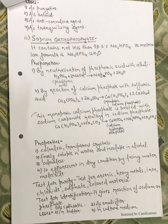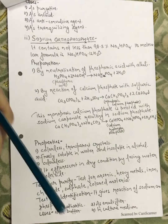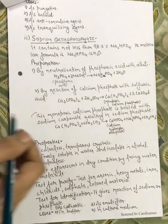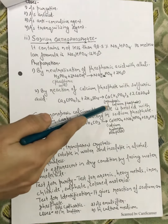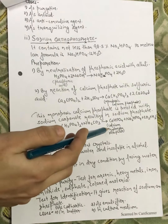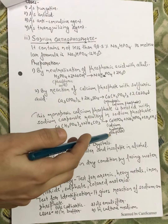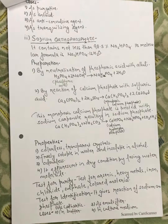Calcium phosphate is reacted with sulfuric acid. This monobasic calcium phosphate is then treated with sodium carbonate, resulting in sodium phosphate. The monobasic calcium phosphate reacts further with sodium carbonate and we get calcium hydrogen phosphate. So this was our preparation.